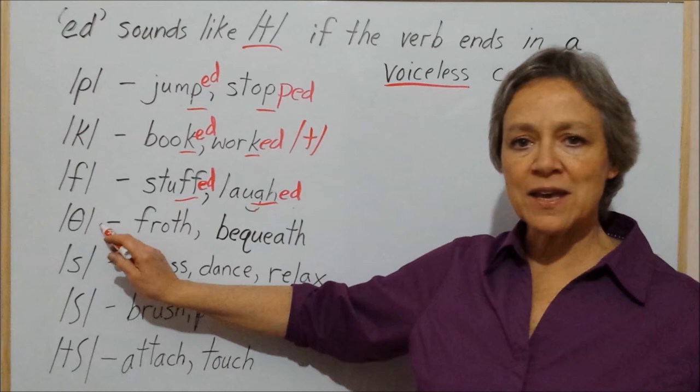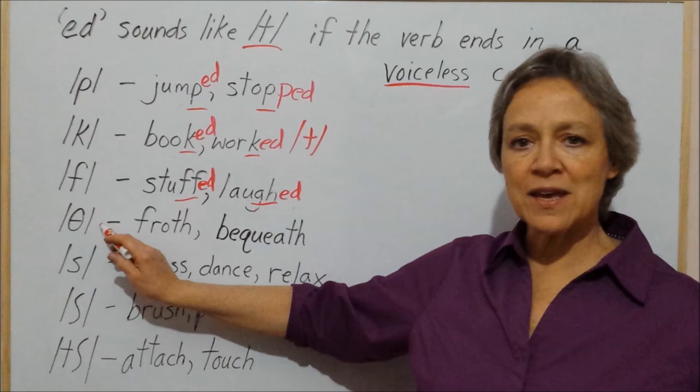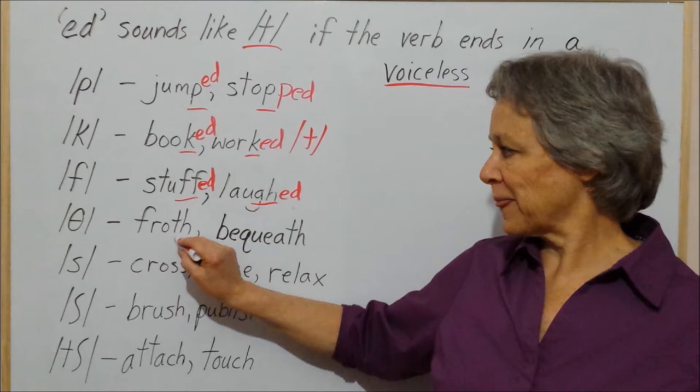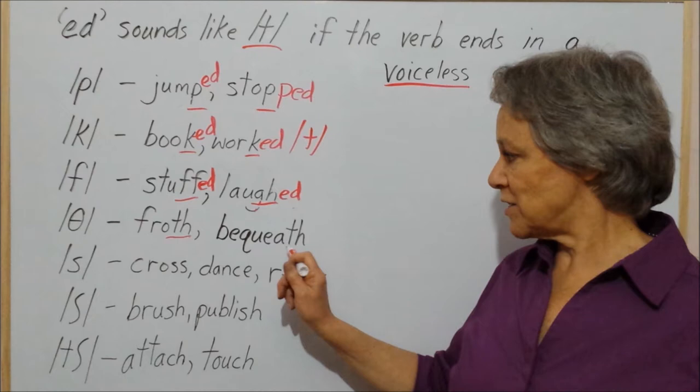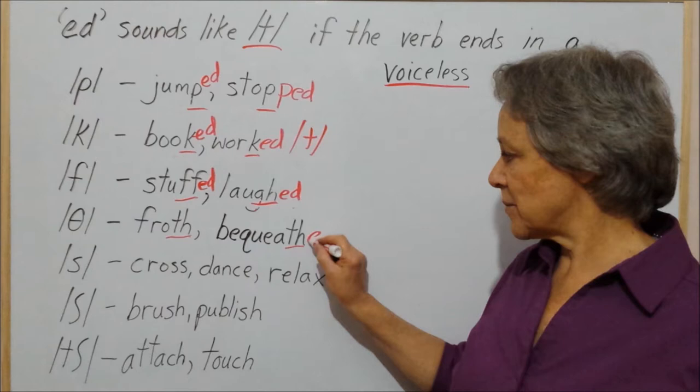When the word ends in the voiceless /θ/ sound, ed will sound like /t/. This ends in /θ/ — 'froth'. The horse frothed at the mouth. This is 'bequeath'; with the ed ending it would be 'bequeathed'.